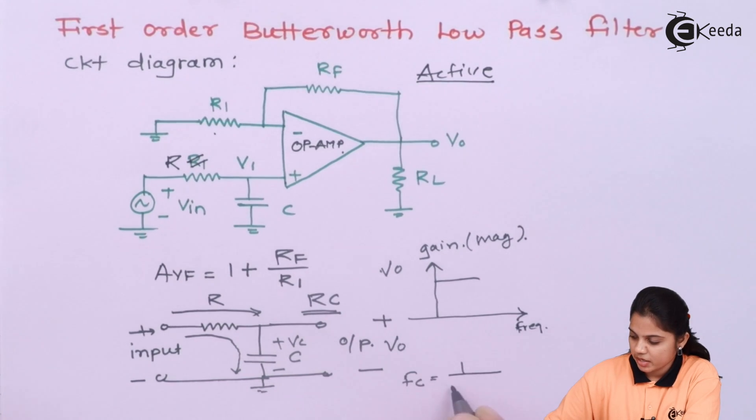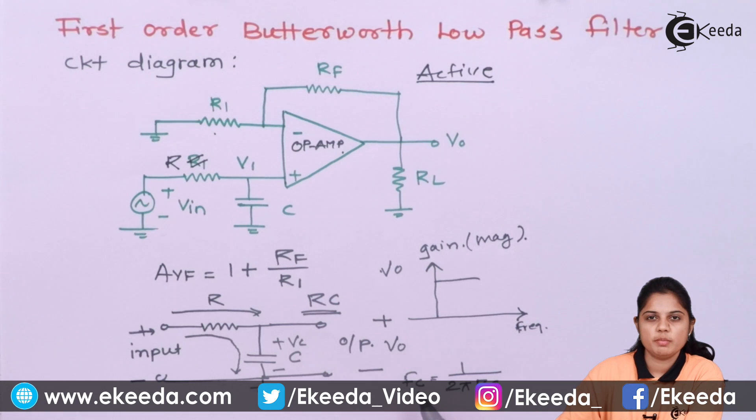But as your frequency increases and that frequency can be decided by RC because the cutoff frequency, Fc is equal to 1 divided by 2 pi RC. Now here you can see if the R and C is having a large value, then your Fc will be low. That will be lower cutoff frequency.